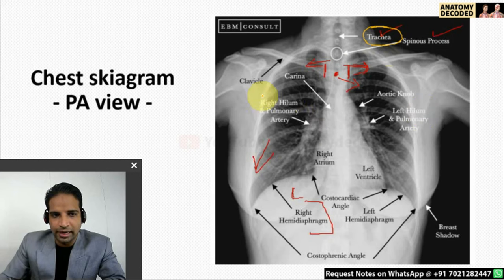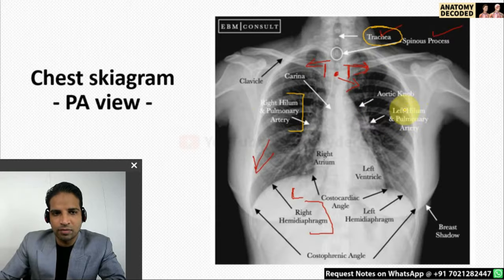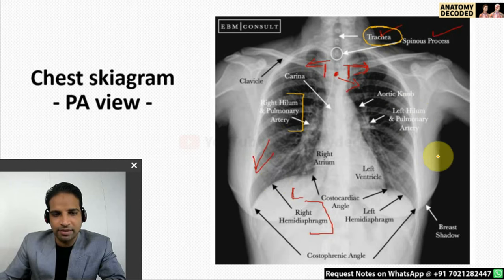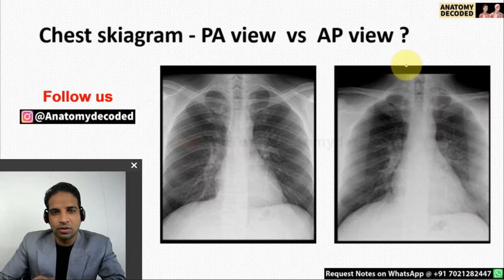The hilum is shown here — the right pulmonary hilum and the left pulmonary hilum. If it is a female chest skygram, the breast shadow will be visible, so that can also be mentioned in the soft tissue shadows. This was about describing the plain skygram postero-anterior view.